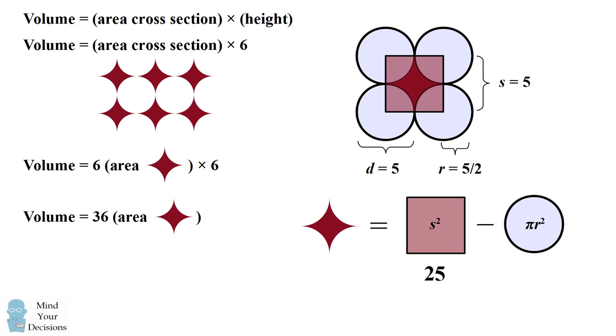This means the area of the square is equal to 25, and the area of the circle is equal to 25π/4. Therefore, the area of the gap is equal to the difference between these two areas.